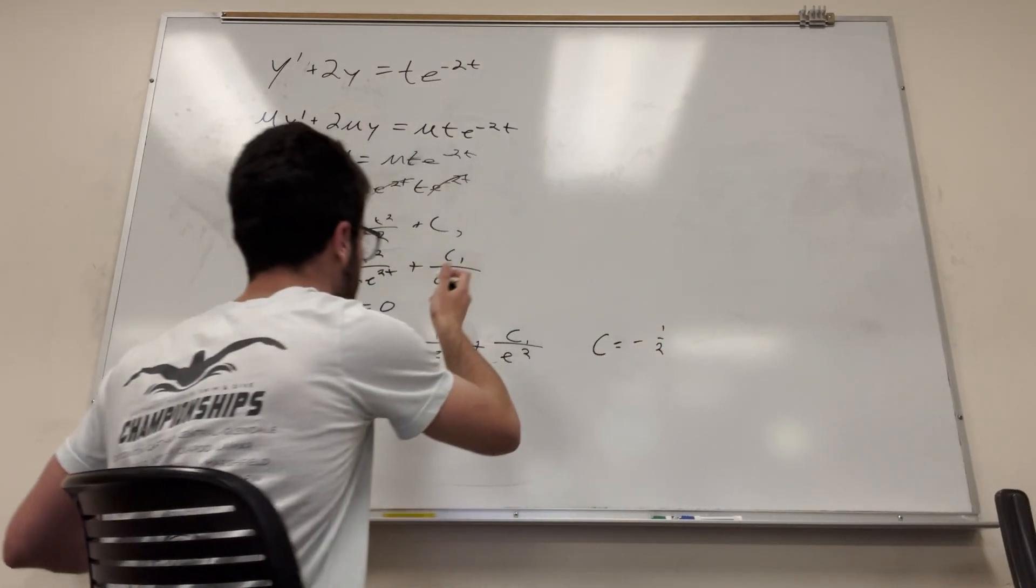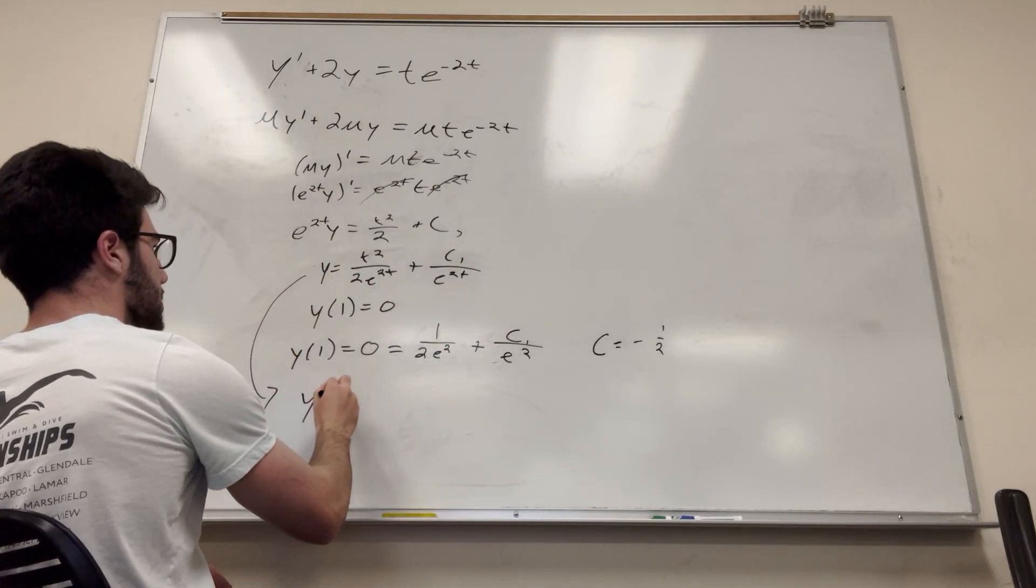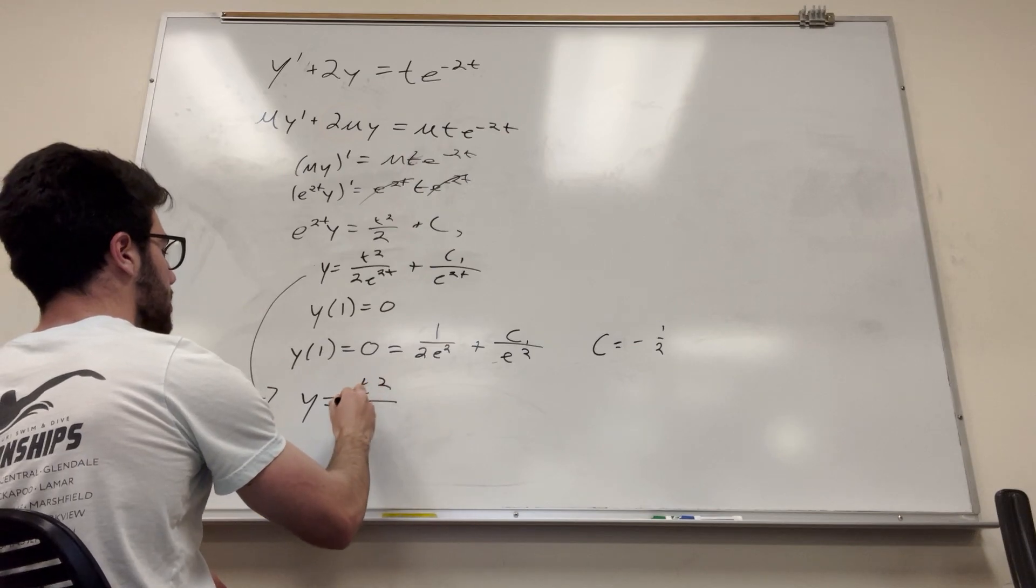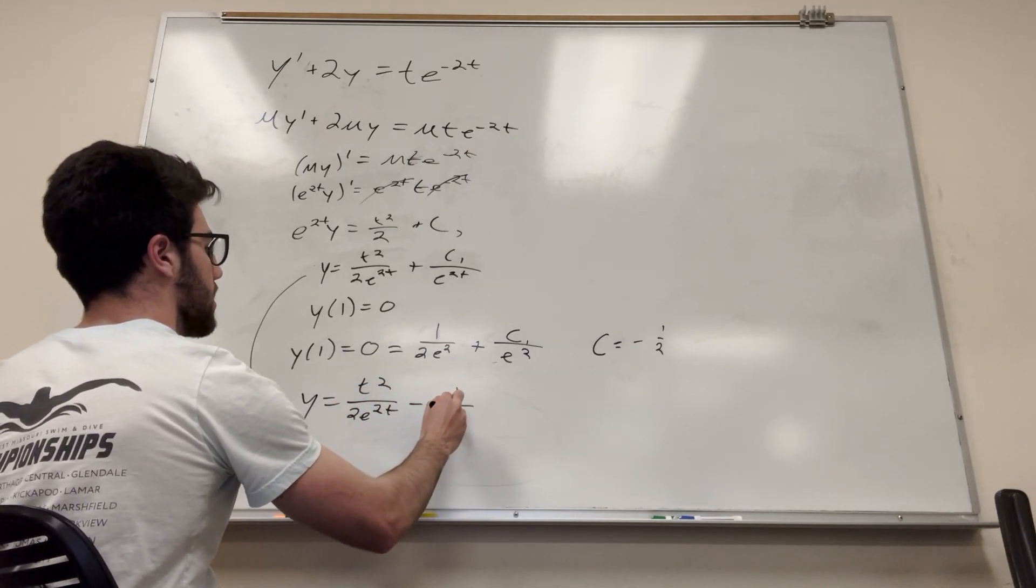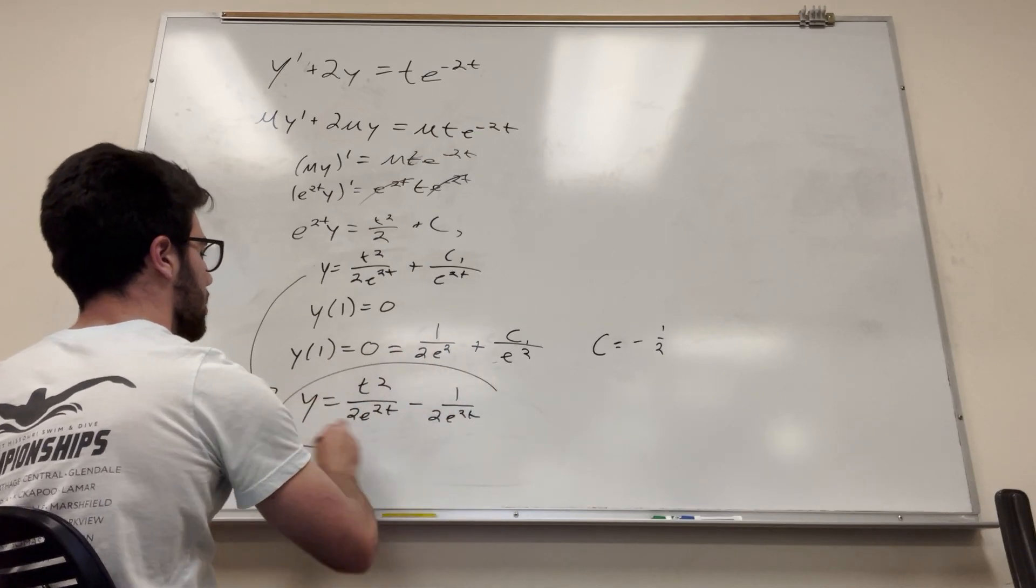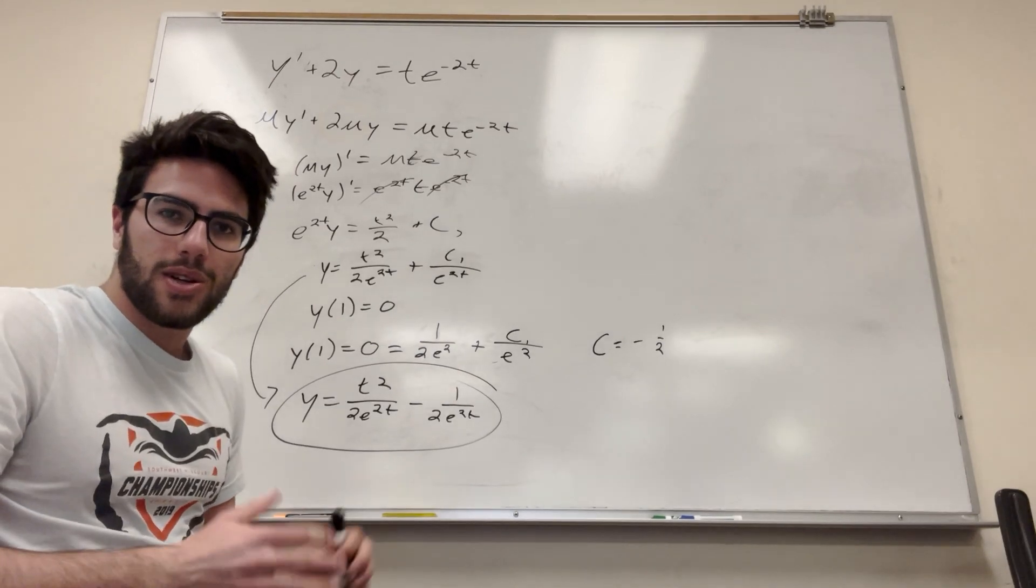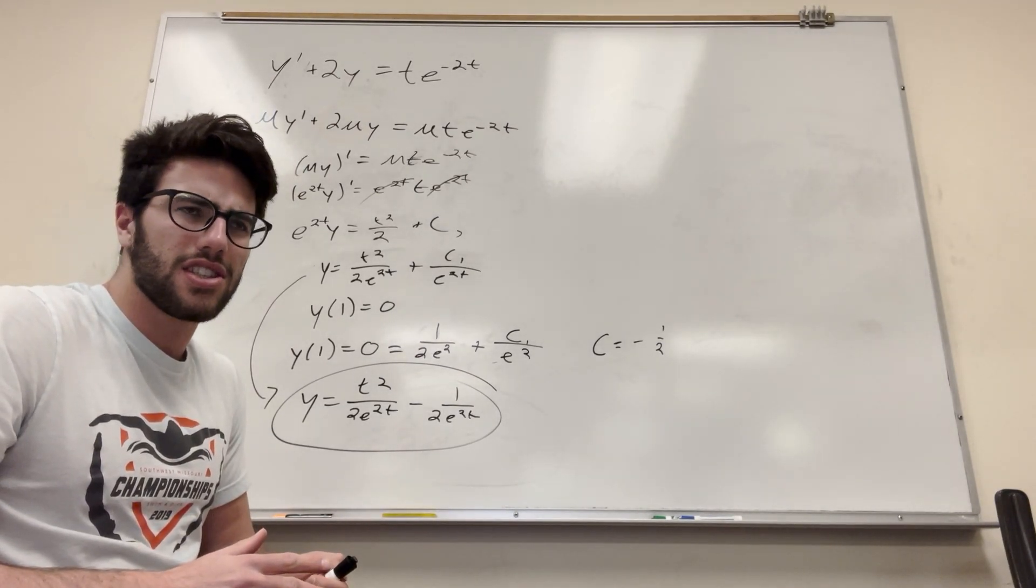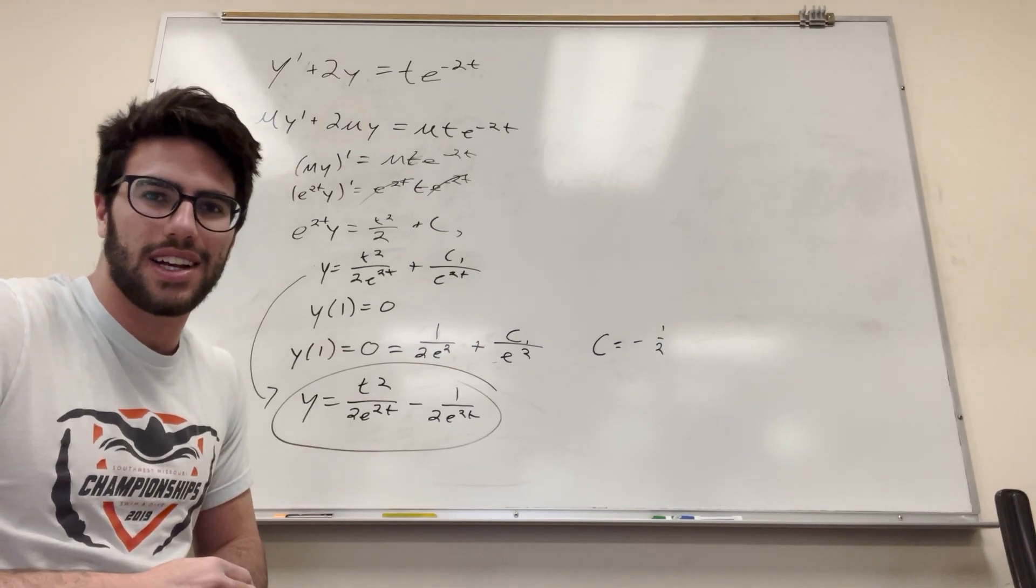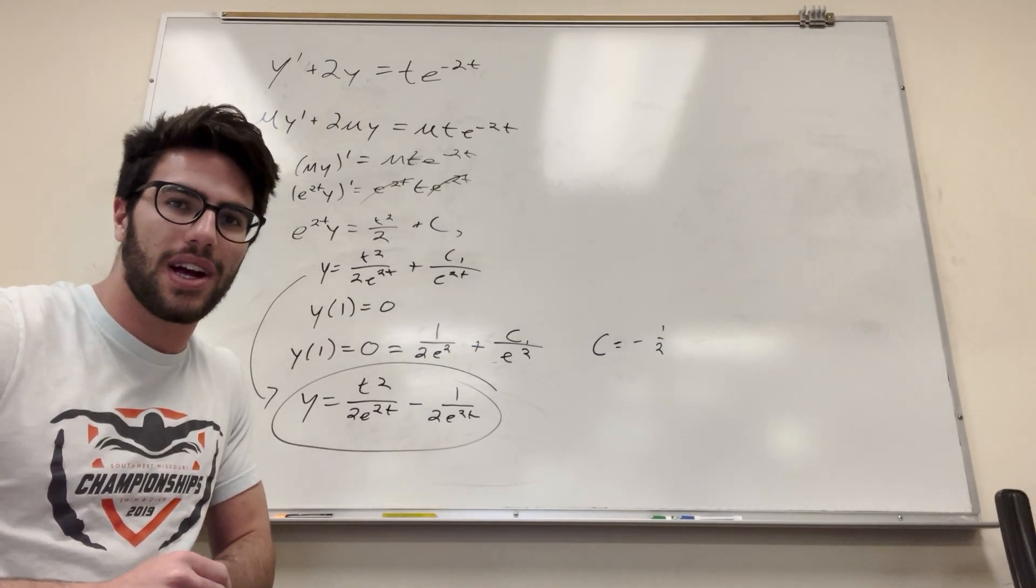And we can go ahead and just plug that into our equation up here, move it back down, and then we're going to get y is equal to t squared over 2 e to the negative 2t minus 1 over 2 e to the negative 2t. And that's the final solution. So that's how you solve this kind of problem. And yeah, good luck on your differential equations homework. It feels weird to say that. Usually I say calc homework. But yeah, good luck on your differential equations homework. I believe in you guys.